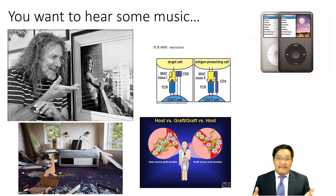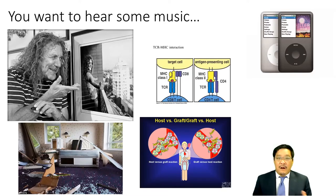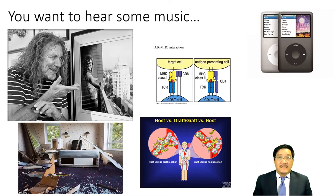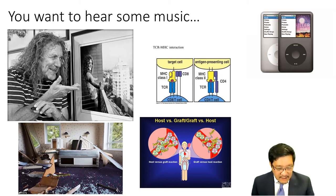We see the major histocompatibility complex one and two — this is the secret handshake you have in yourself, and everything foreign is recognized and destroyed. So we have host versus graft and graft versus host. People say they spent 15 grand to go to some country and get stem cells — from yourself, that's fine, but they're old and damaged. Younger mesenchymal stem cells are probably going to get destroyed by the immune system within days, so the benefit will be mitigated.